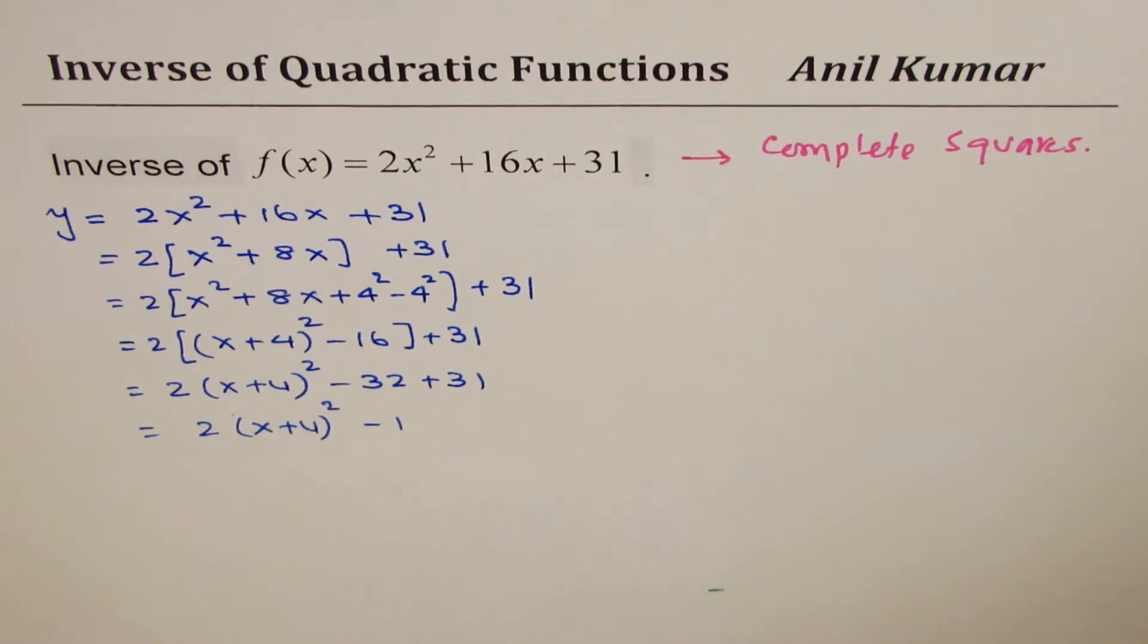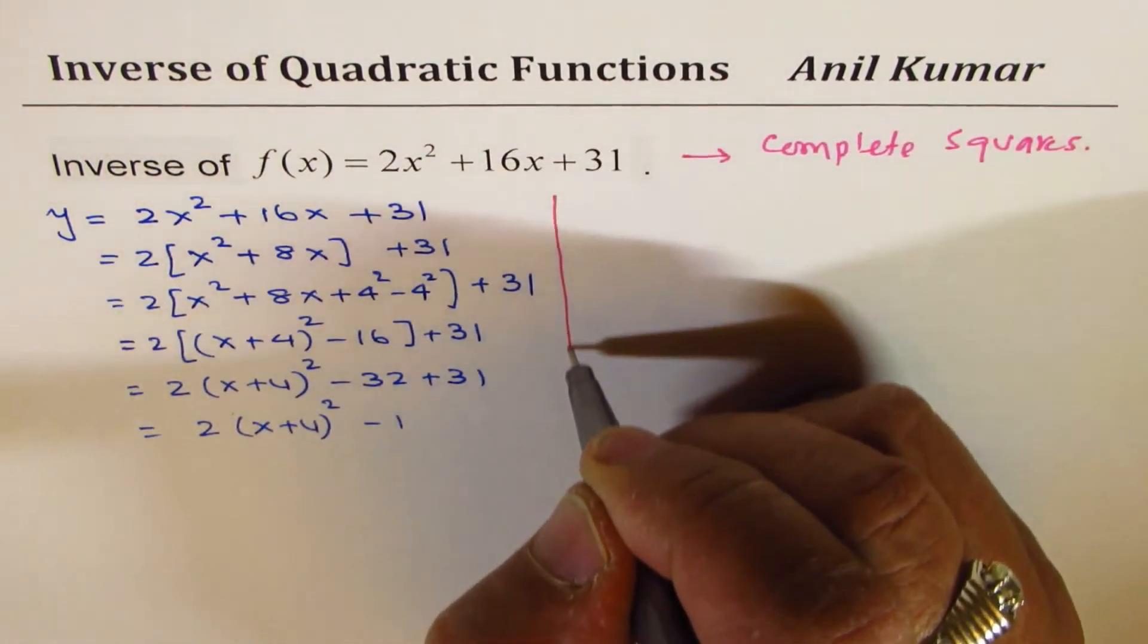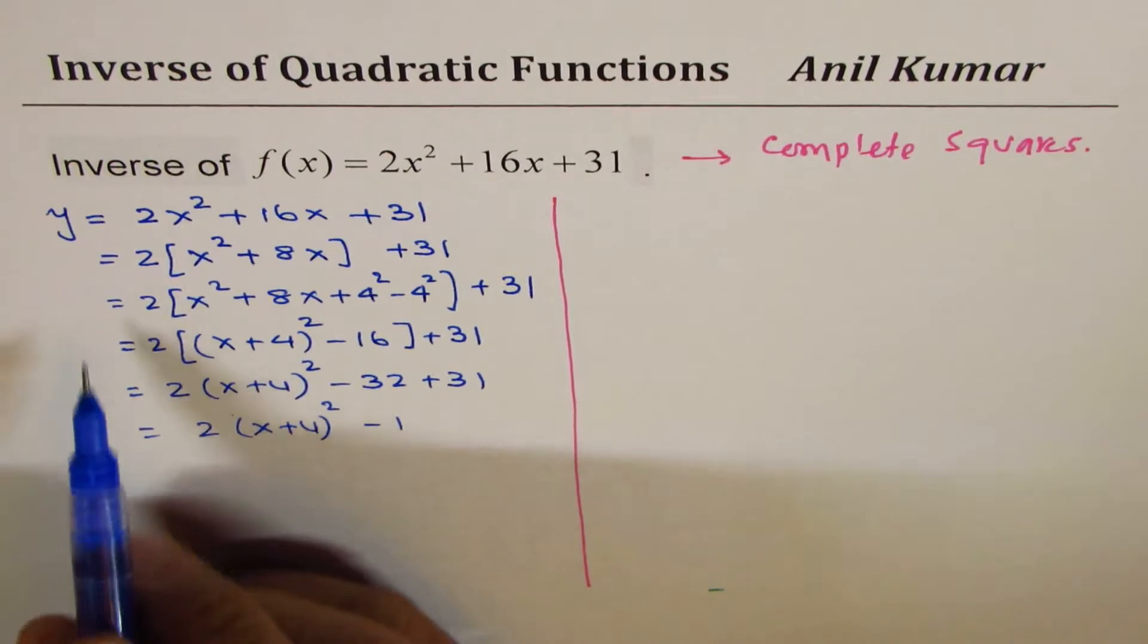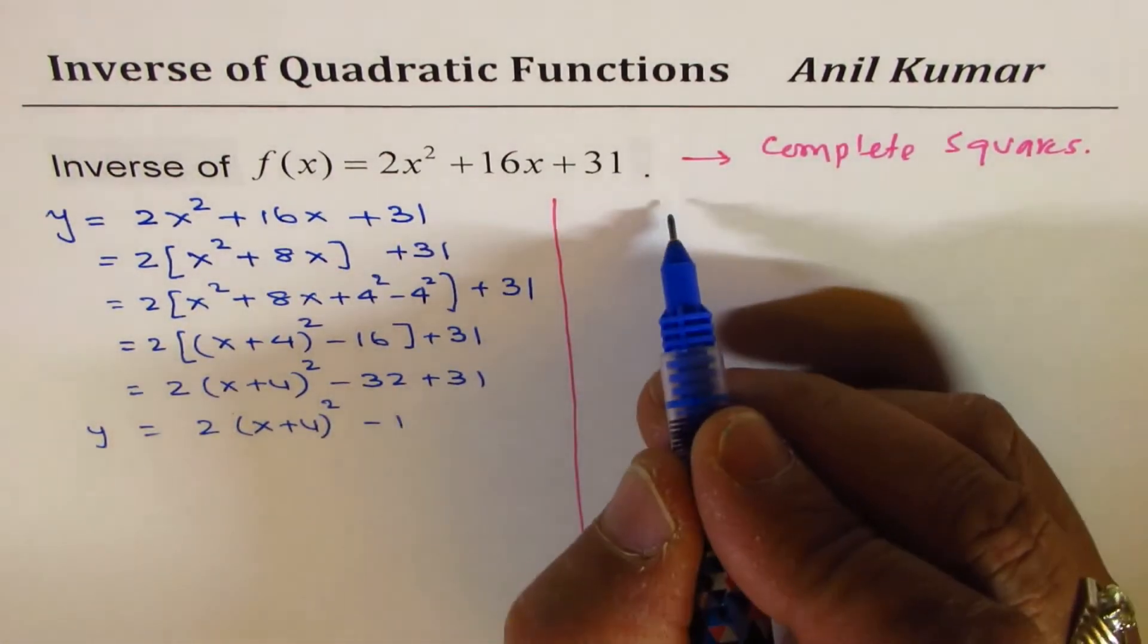Now, we need to find inverse of this function. So, to find inverse, we'll flip x and y and then solve for y. So, here we have y equals to all this.